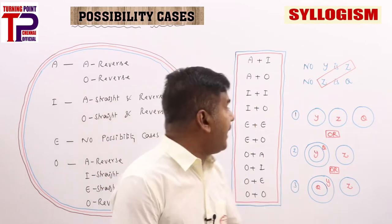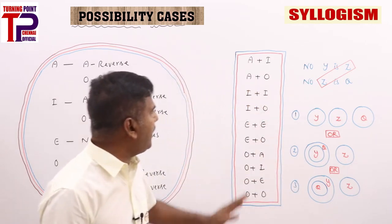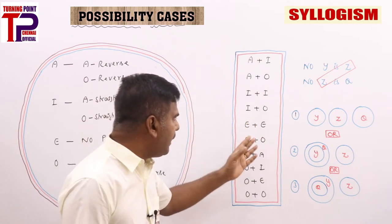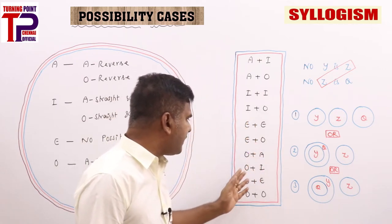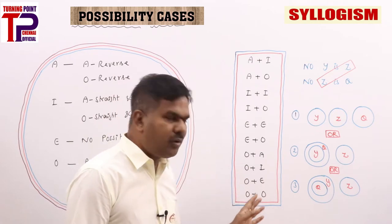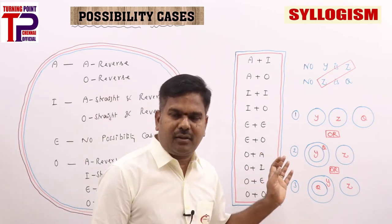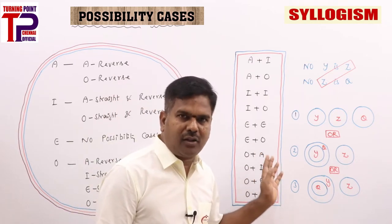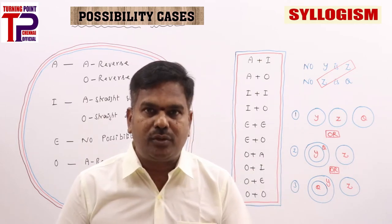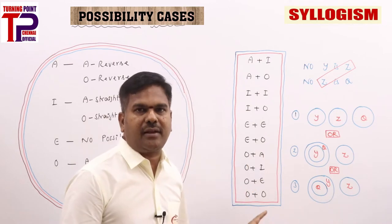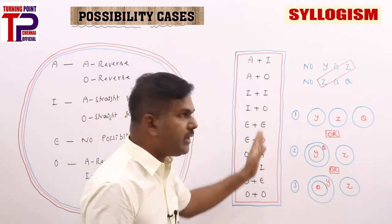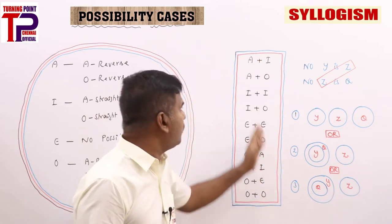Apart from the six rules, I have listed combinations: A plus I, A plus O, I plus I, I plus O, E plus E, E plus O, O plus A, O plus I, O plus E, and O plus O. Because we have only six rules, whatever other combinations exist, you won't be getting any conclusion — even if properly aligned.